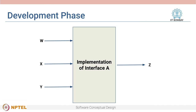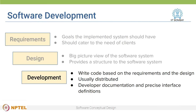The code being implemented by the interface can change as long as the interface remains the same. In the development phase, software developers write code based on the requirements and the design of the software system. Development is usually distributed — that is, multiple people write code which implement the required functionalities. To ensure that everyone in the development team is in agreement, developers document what their code does and write precise interface definitions.